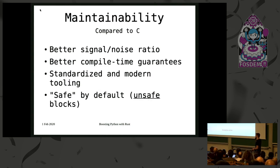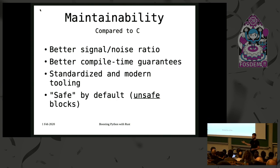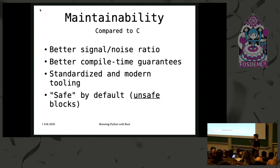Compared to C, maintainability is a lot better. It has a better signal-to-noise ratio — more of the code you write is actually the algorithm you're trying to implement, with less to do with freeing memory and getting segmentation faults. You have better compile-time guarantees, standardized modern tooling in the form of cargo, auto-formatting, and a test suite. And it's safe by default, with a few escape hatches like unsafe blocks.